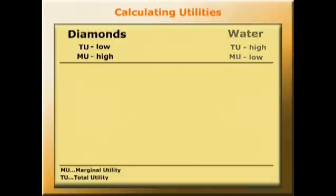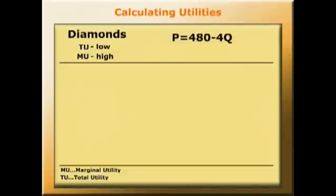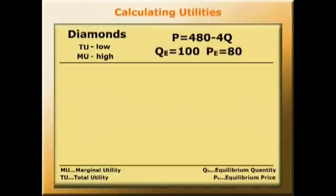So let's focus first of all on diamonds, and we'll assume a demand function of P equals 480 minus 4Q, and an assumed equilibrium where Q equals 100, and PE equals 80.